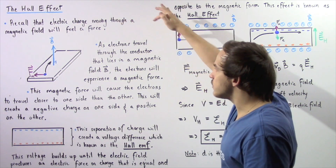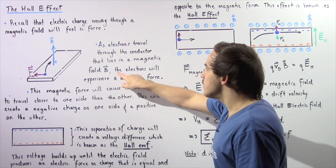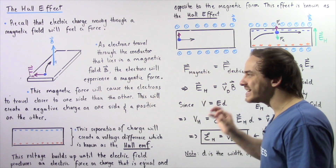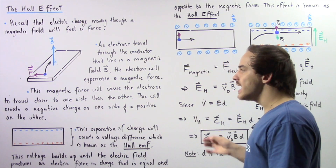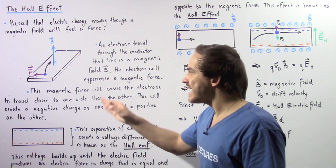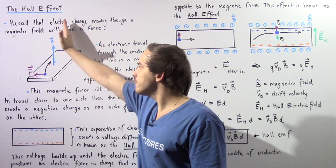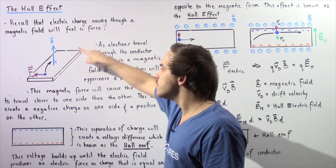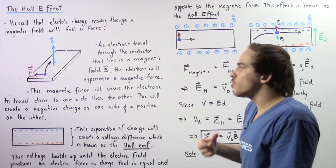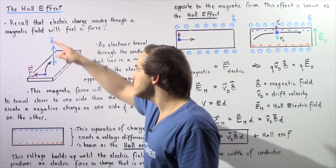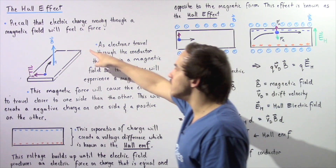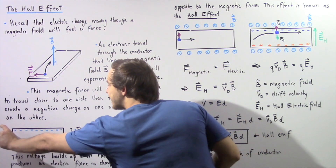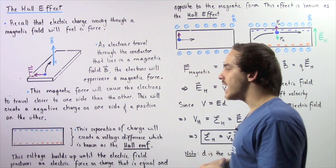As electrons travel through the conductor that lies in the magnetic field B, the electrons will experience a magnetic force. This magnetic force will cause the electrons to follow a curved pathway, traveling closer to one side of the conductor than the other. So this will create an overall negative charge on one side of our conductor and an overall positive charge on the other side.